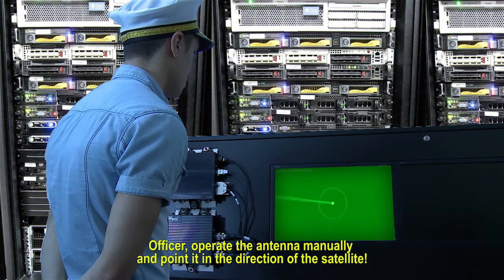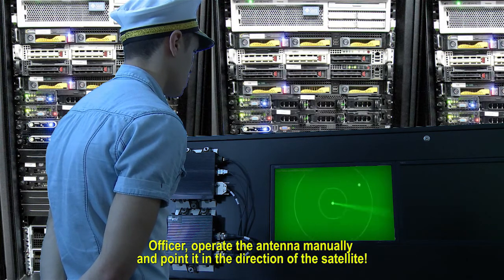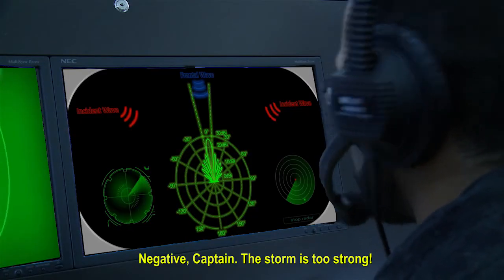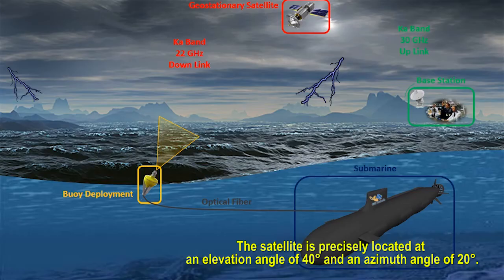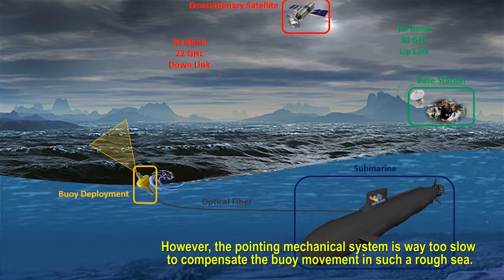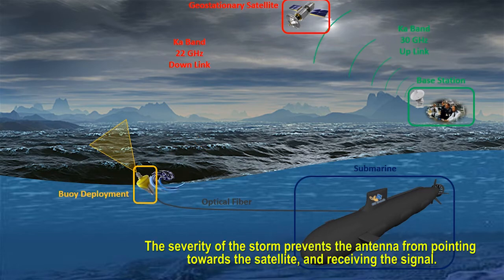Officer, operate the antenna manually and point it in the direction of the satellite. Negative, Captain. The storm is too strong. The satellite is precisely located at an elevation angle of 40 degrees and an azimuth angle of 20 degrees. However, the mechanical pointing system is way too slow to compensate for the buoy movement in such a rough sea. The severity of the storm prevents the antenna from pointing toward the satellite and receiving the signal, Captain.